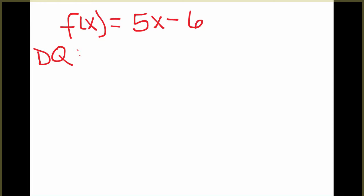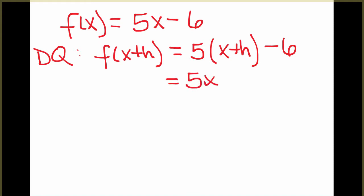So the difference quotient formula begins with f of x plus h. So the first thing you'll want to do is evaluate f of x plus h. What that means is in your original equation, you need to replace all of the x's with x plus h and then simplify as much as possible. So I substituted in x plus h and now I am expanding to get 5x plus 5h minus 6.